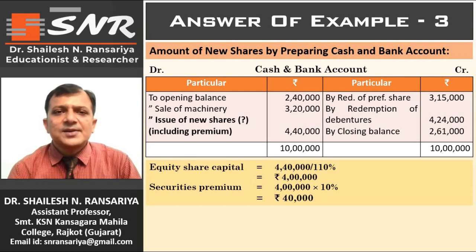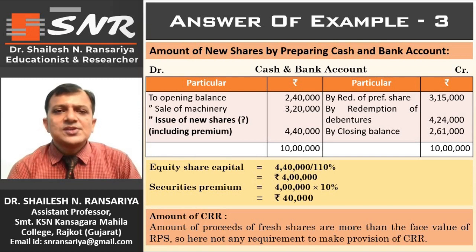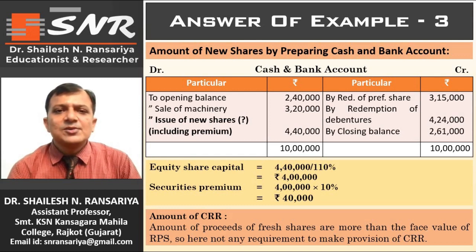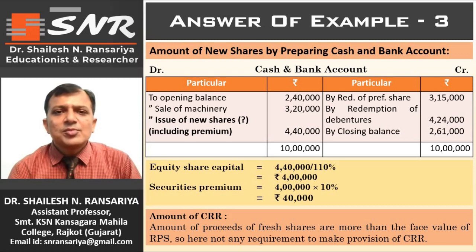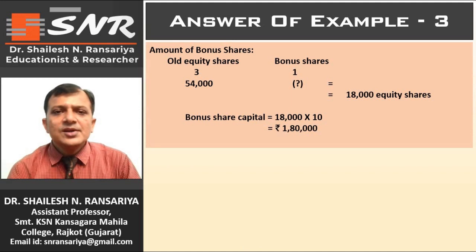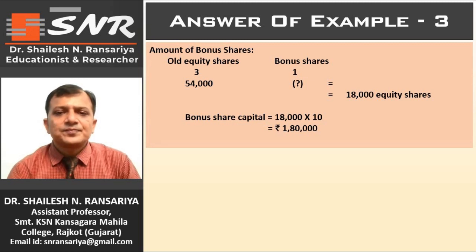Now, the amount of CRR. The face value of RPS is Rs. 3,00,000 and the face value of new shares is Rs. 4,00,000. So, the required value is less than the available value — the face value of RPS is less than the face value of new shares. So, it is not required to make provision for CRR. Next calculation is for the amount of bonus shares. The company issued 1 bonus share for every 3 equity shares. Equity shares given in the balance sheet: Rs. 5,40,000 (54,000 shares). Number of bonus shares: 18,000. So, the bonus share capital is 18,000 multiplied by Rs. 10 = Rs. 1,80,000.